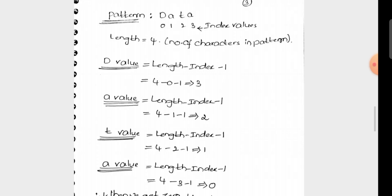Using the formula length minus index minus 1: D at index 0 gives 4 minus 0 minus 1 = 3. A at index 1 gives 4 minus 1 minus 1 = 2. T at index 2 gives 4 minus 2 minus 1 = 1. The last A at index 3 gives 4 minus 3 minus 1 = 0.